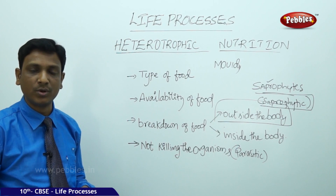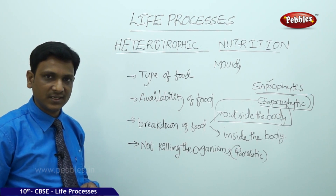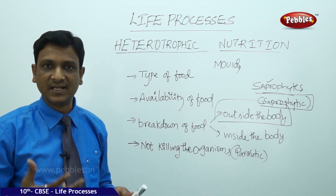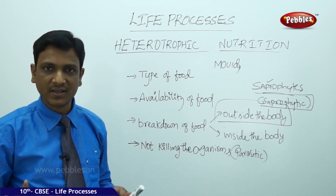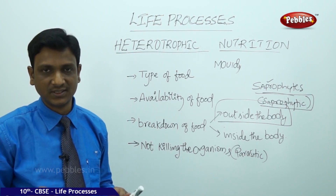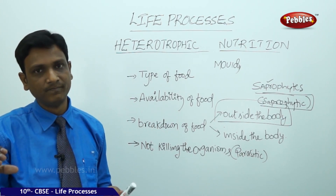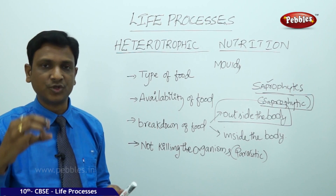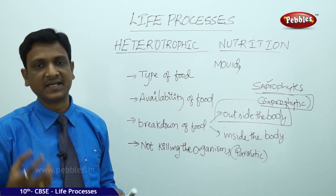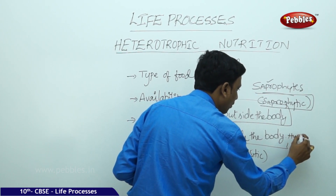In saprophytic nutrition, the breakdown of food takes place outside the body. Saprophytes do not have any special internal structures or enzymes to break down food inside their bodies. In contrast, animals like cats, dogs, humans, birds, and reptiles eat food and digest it in their stomachs using enzymes. These enzymes convert complex food into simple nutrients, which are absorbed into the blood, supplied to cells, and used for maintenance, growth, and various activities of the organism.